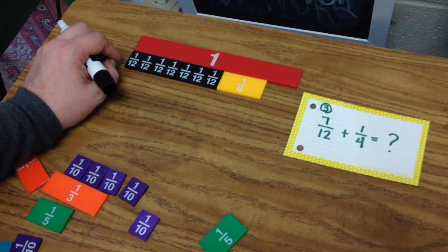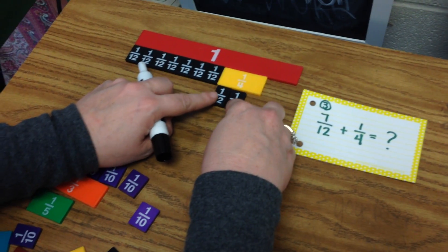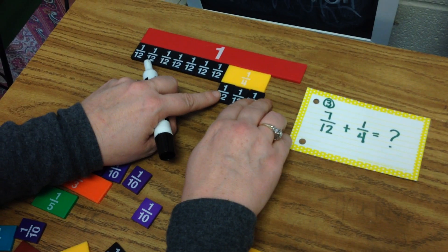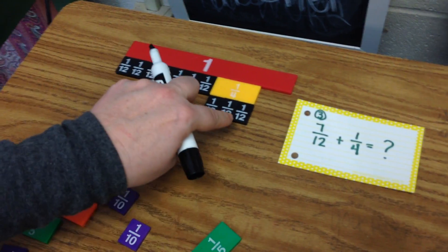Since four goes into twelve evenly, I'm only going to replace the fourth. So I'll just see how many twelfths it takes to make one-fourth. It's three. So I have seven-twelfths plus three-twelfths.